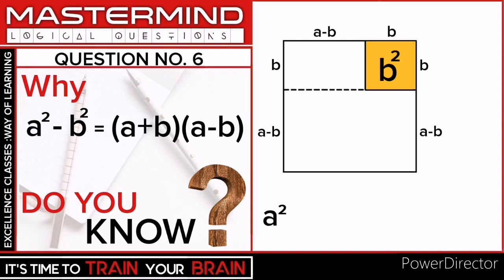Now we just subtract the area of this square from the area of this big square. So here we have a² minus b².